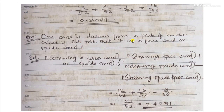Face cards and spade cards are not mutually exclusive, because a card can be both a face card and a spade card. So the joint occurrence must be subtracted. The probability of drawing a face card or spade card equals the probability of drawing a face card, plus the probability of drawing a spade card, minus the probability of drawing a spade face card.